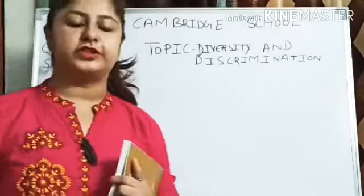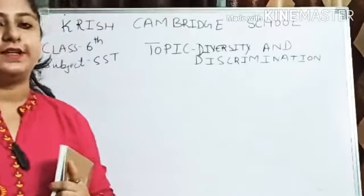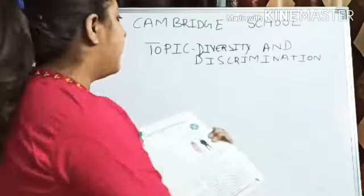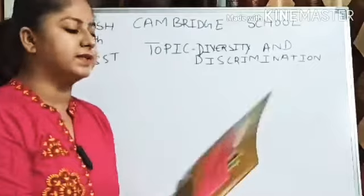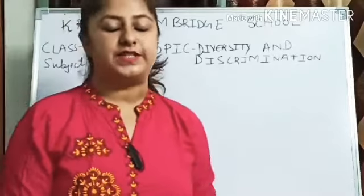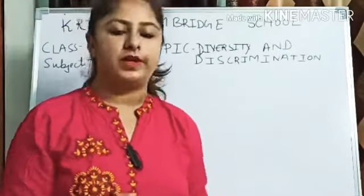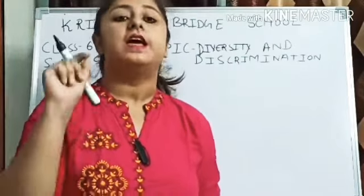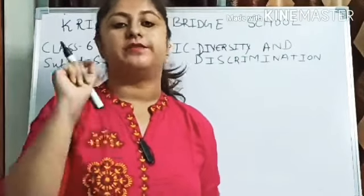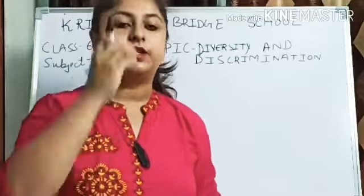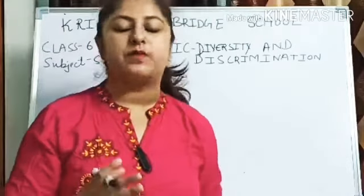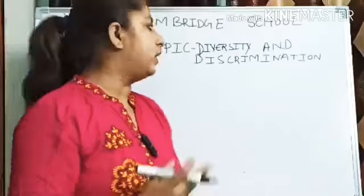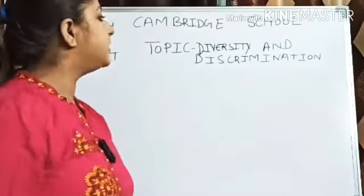Hello students, welcome to the Fresh Cambridge School online classes. This is the class for Class 6, our subject is SST. Today we will be discussing Chapter 2 of Civics. For the first chapter, we already discussed 'Understanding Diversity,' where we learned about the types of diversity and what kind of diversity exists in India.